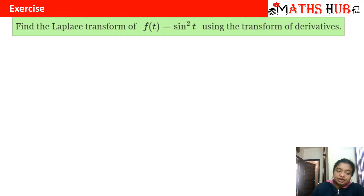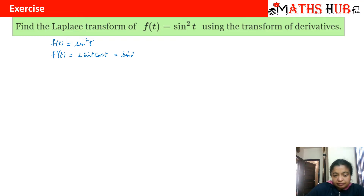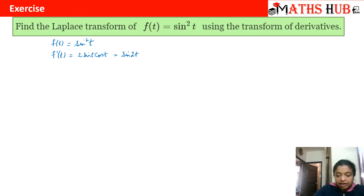Let us apply this formula to a question. We need to find the Laplace transform of f(t) = sin²t using the transform of derivatives. If f(t) = sin²t, then f'(t) = 2·sin t·cos t, which becomes sin(2t).